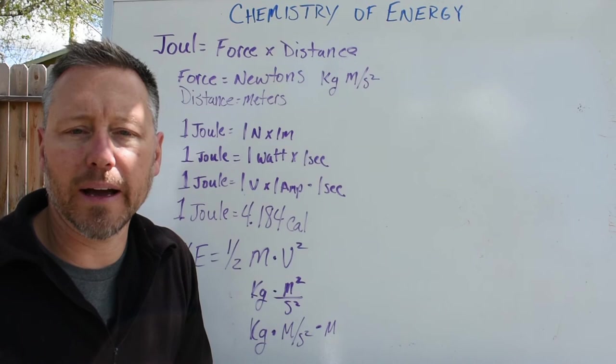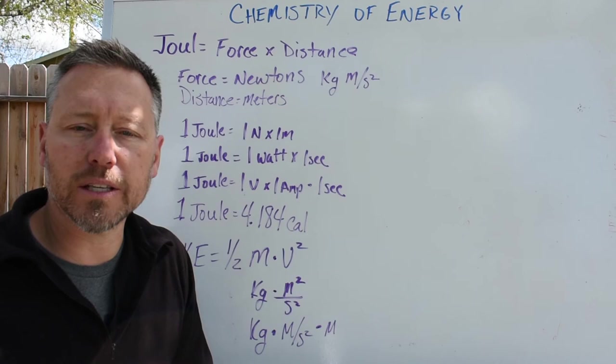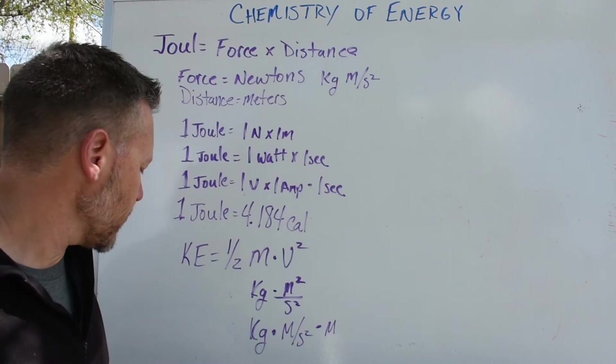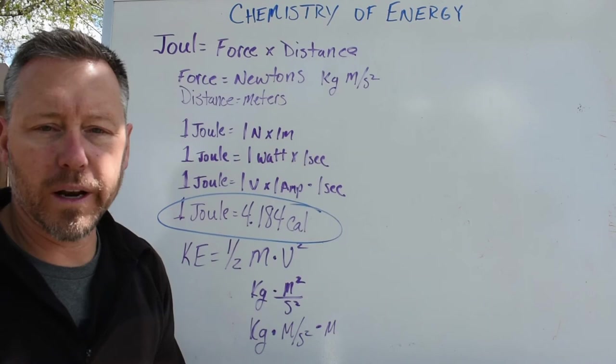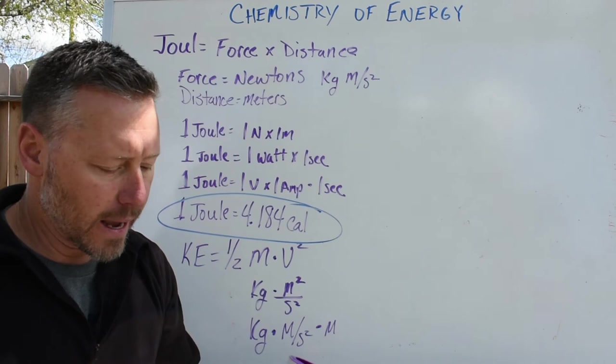Well now what if we look at that in terms of heat produced by a chemical reaction? Well we can measure that in terms of joules. We can also measure it in this other form that you've probably seen before and that is calories. So one joule is equal to 4.184 calories. And that's not the same exactly as the back of your food.